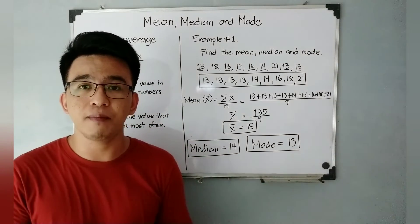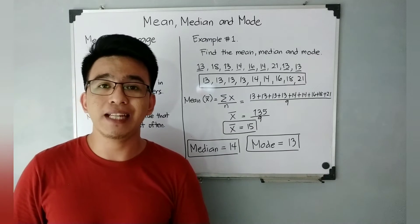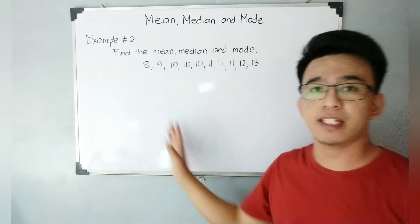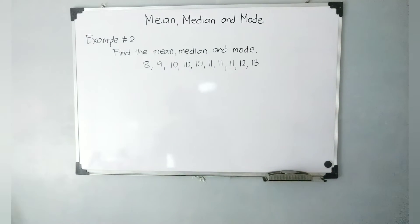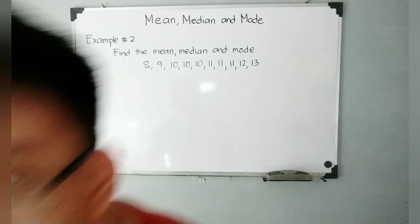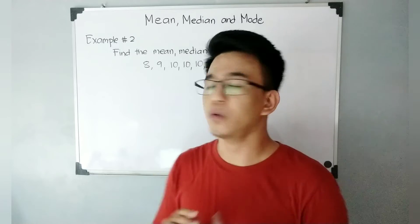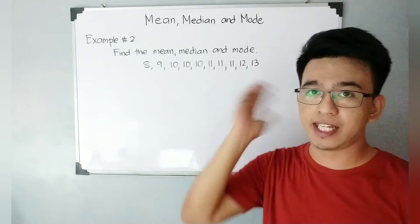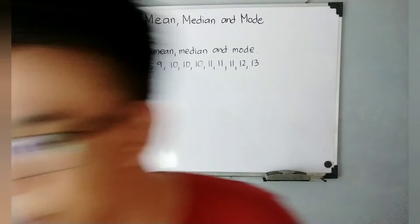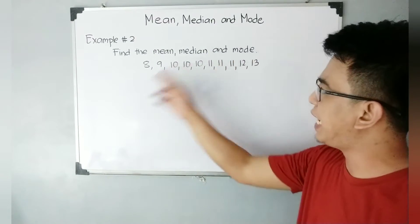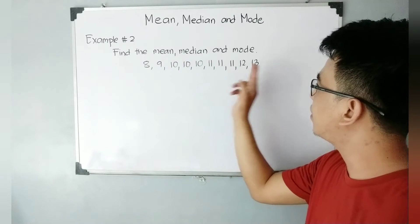In the next part of our video, I will give you another example. For Example Number 2, find the mean, median, and mode of this given dataset: 8, 9, 10, 10, 10, 10, 11, 11, 11, 12, and 13. These are again examples of ungrouped data.